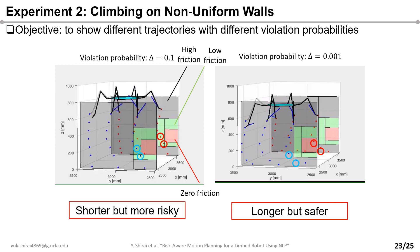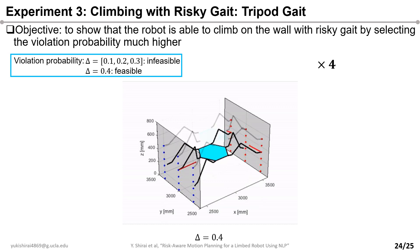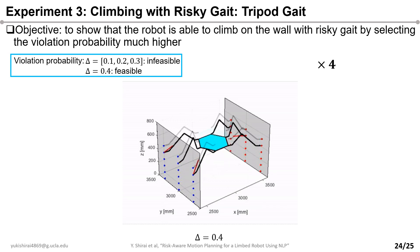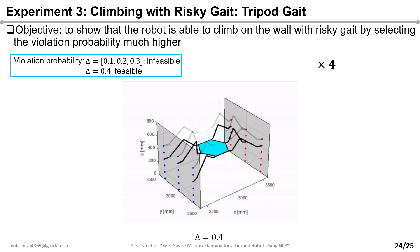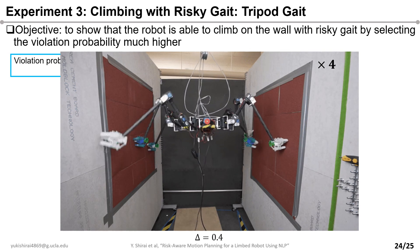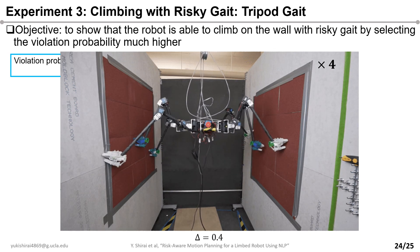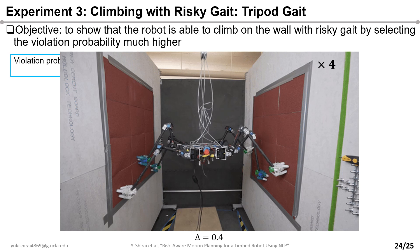Next, we present the robot conducting a very unstable gait, such as tripod gait, by setting the violation probability much higher. A tripod gait is almost infeasible with relatively lower violation probabilities. However, by utilizing our proposed planner and increasing the violation probability to 0.4, the planner generates a feasible trajectory as shown in this video. The robot succeeded in climbing on the walls with tripod gait, and its climbing velocity was 2.5 cm per second, which is 3 times faster than one-leg gait.